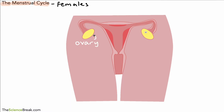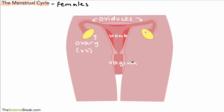Here we've got the ovaries — actually two of them in that yellowy kind of color — so there's two ovaries, one on each side. Next we have the tubes that lead from the ovaries; these are called the oviducts, sometimes called the fallopian tubes, and there's two of those. We then have the womb, sometimes called the uterus — either word is fine — and the final label is the vagina. So these are the key parts we need to know and be able to refer to.